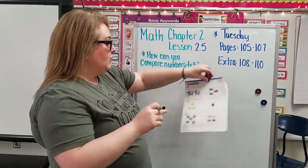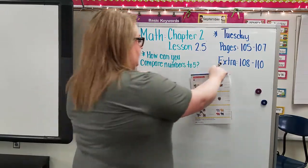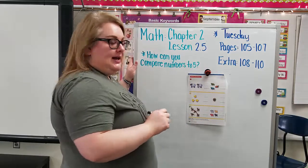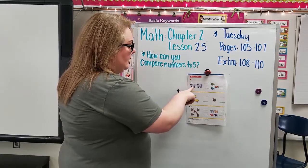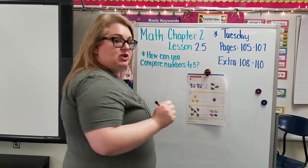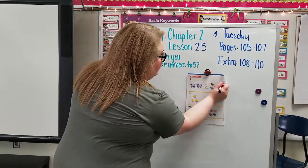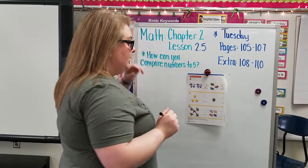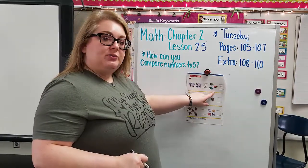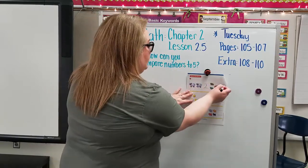For these we're going to circle the greater number. So first we're going to see how many in each set. So how many sheep? Ready? One, two. Two sheep and how many turtles? One, two, three. Which one is bigger? Which one is more? Is two more or is three more? Three is more, so go ahead and circle the number three.